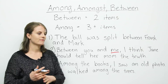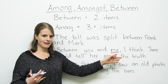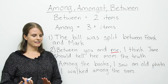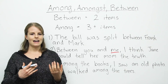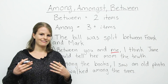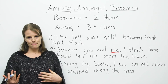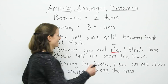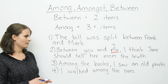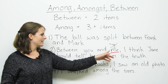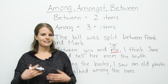A second example: 'Between you and me, I think Jane should tell her mom the truth.' Again, there are two of us — you and me — and we often use between to say let's keep this a secret between us. Now, you may have noticed 'me' is underlined. Some people, especially native speakers, think it should be 'I' — 'between you and I.' This is in fact incorrect because between is a preposition and should be followed by 'me.' But you will hear a lot of people say 'between you and I' — it's not grammatically correct.